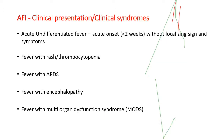AFI can present in the following ways: acute undifferentiated fever with acute onset less than 2 weeks without any localizing signs and symptoms; fever with rash and thrombocytopenia; fever with ARDS; fever with encephalopathy; or fever with multi-organ dysfunction syndrome.